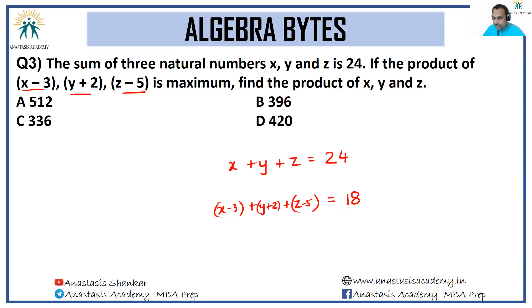Now this product will be maximized with the sum as 18 if each of these three terms are equal. If each of these three terms are equal to 6, 6, and 6, then the product will be maximized.